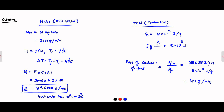So the rate of combustion of fuel is 42 grams per minute. To maintain this whole operation, per minute 42 grams of this fuel has to undergo combustion. This is the answer.